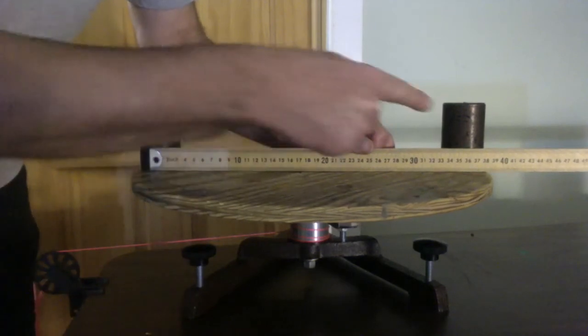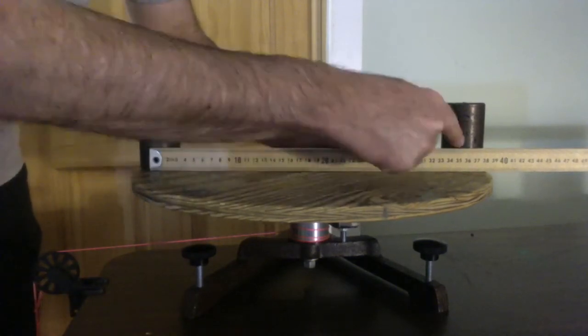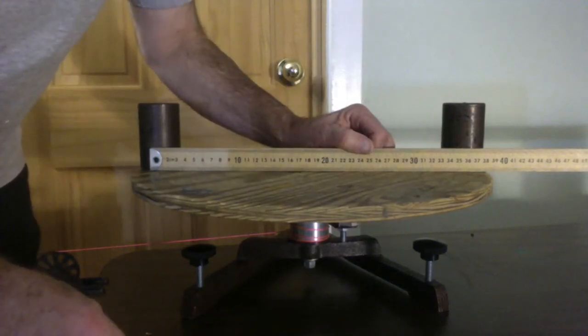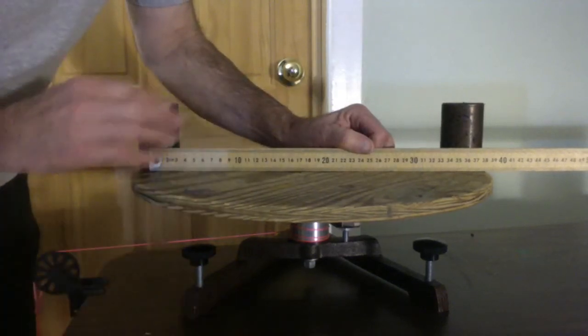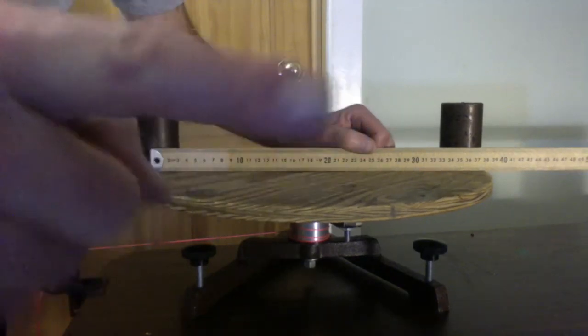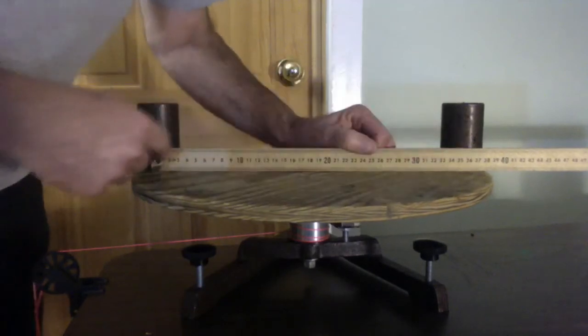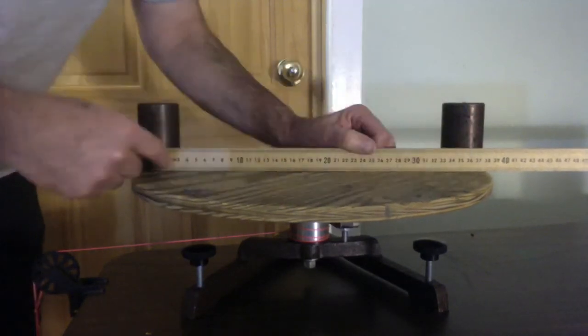Now each of these one kilogram masses is 18 centimeters center to the center. That's the radius for each one. We're going to treat them like point masses. The camera is giving us a little parallax error, but I'm lining it up myself right here. And it's 36 centimeters all the way across.